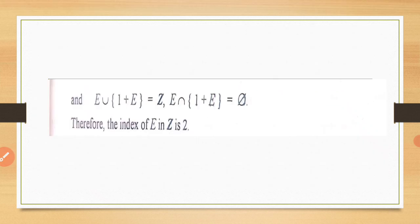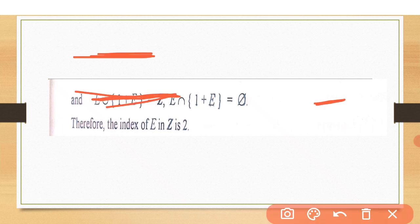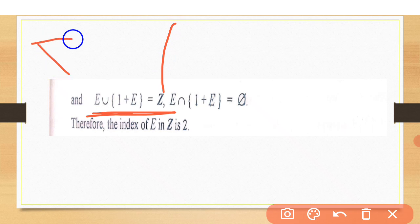So let's come next. When we take union, here we see the distinctness of left and right cosets. When we take union of E and 1 plus E, it gives us Z. And when we take the intersection of E and 1 plus E, it gives us the empty set. This is distinctness.